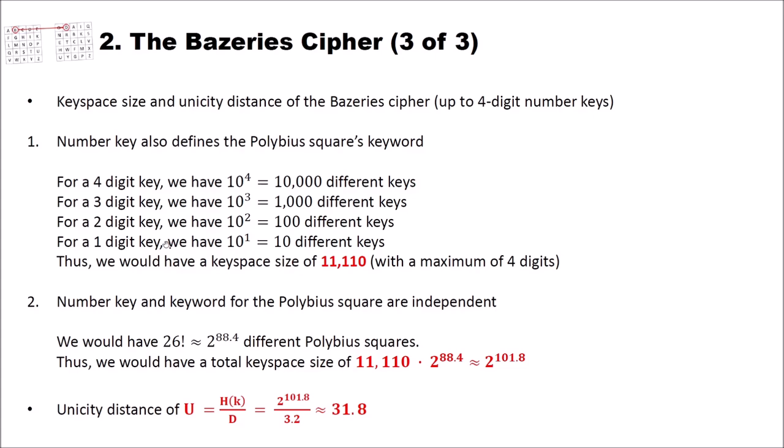Now let's have a look at a more difficult case, where the number key and the keyword for the Polybius square are independent. And this is not the original Bazeries cipher, but I think it's also interesting. When we have a different keyword for the Polybius square, we would have 26 factorial different Polybius squares, and this is about 2 to the power of 88. We have to multiply the key space size of the digit, or the number key, and the Polybius square. This means we have to multiply 11,110 with 2 to the power of 88.4, and this is about 2 to the power of 101.8.